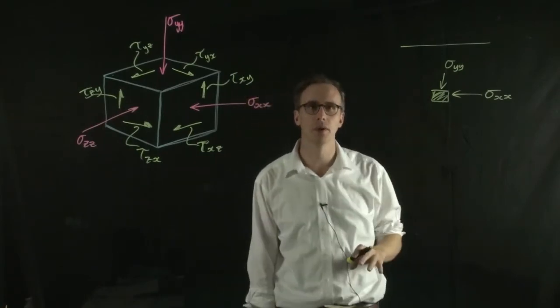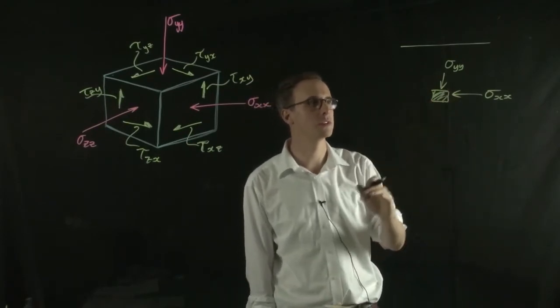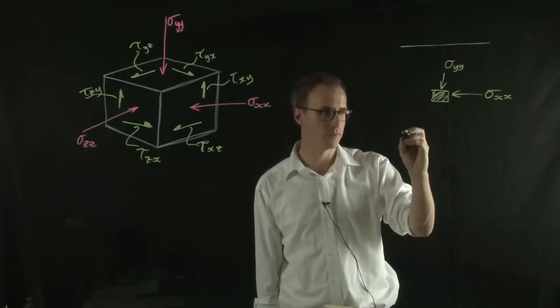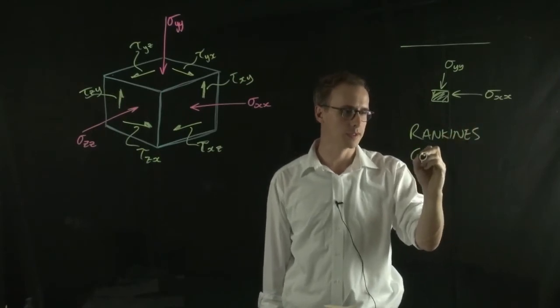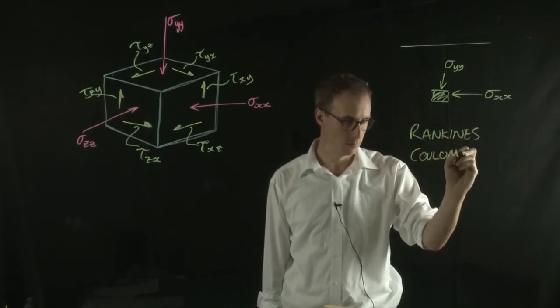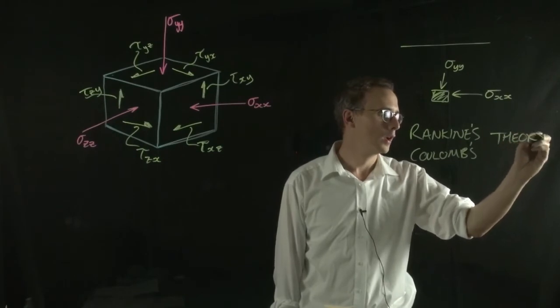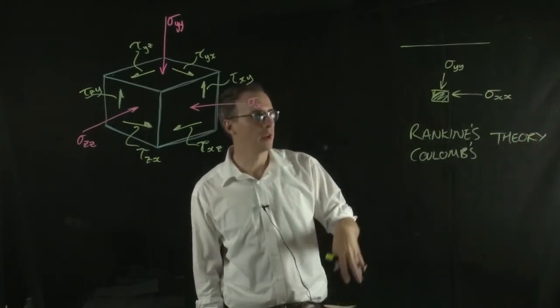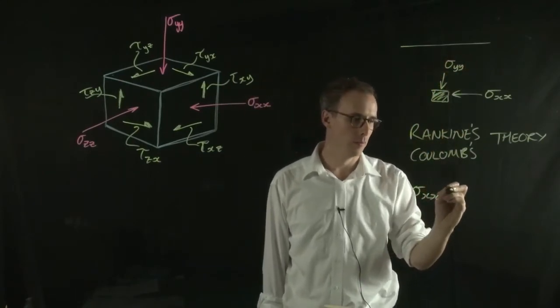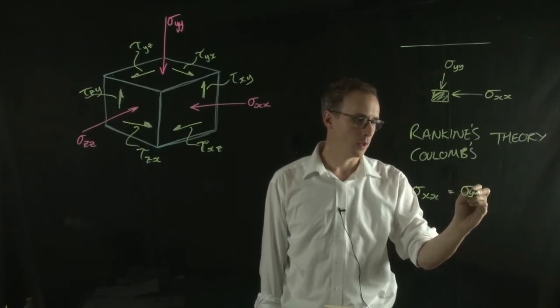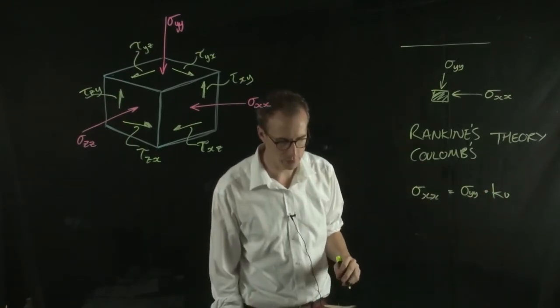If we're just considering the self-weight of the soil and there's no structure on it, we can use concepts of lateral earth pressure to derive this horizontal stress. There's the Rankine's theory and the Coulomb's theory. There's a bunch of other theories, but essentially what they do is they take the vertical stress and relate it to the horizontal stress by multiplying it by a coefficient of lateral earth pressure.